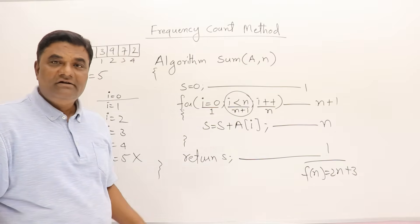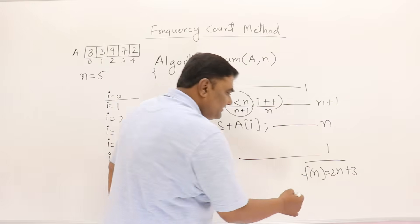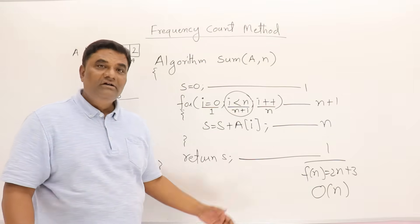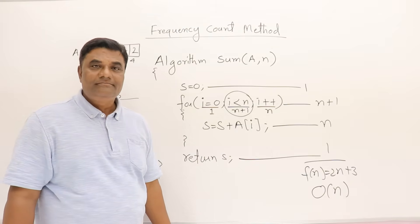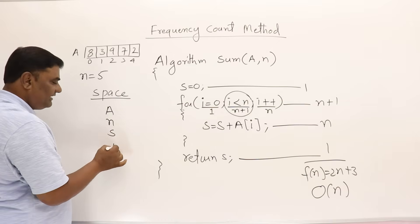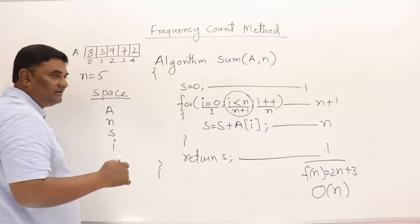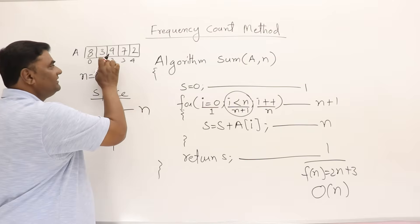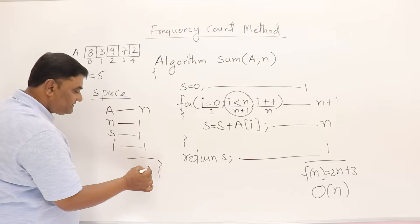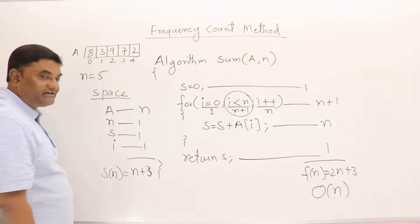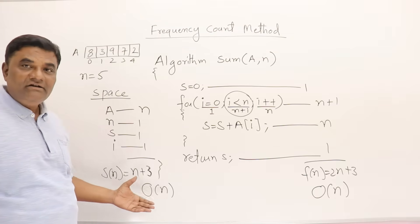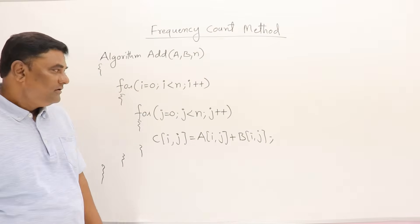The degree of that polynomial is 1, so we say the time complexity is order of n. For space complexity, the variables used are: array a of size n words, and scalar variables n, s, i — each one word. Total space is n + 3. This polynomial is also degree one, so space complexity is order of n. Both time and space complexity are order of n.